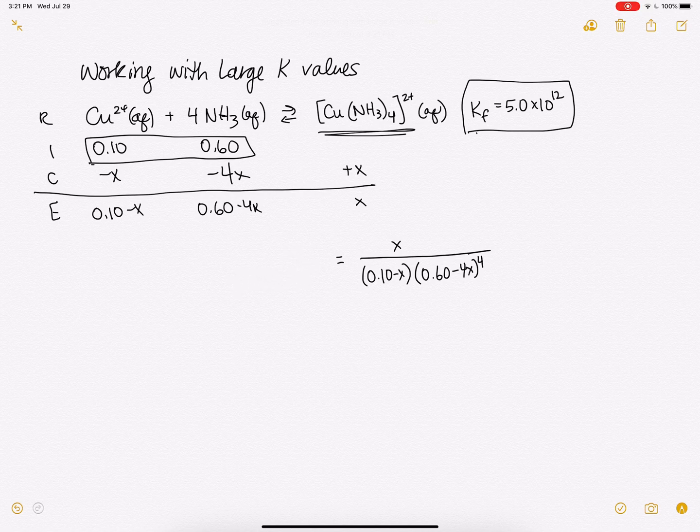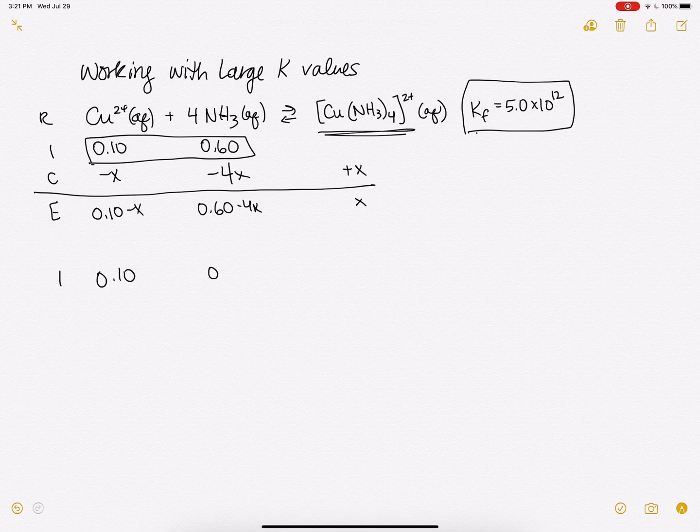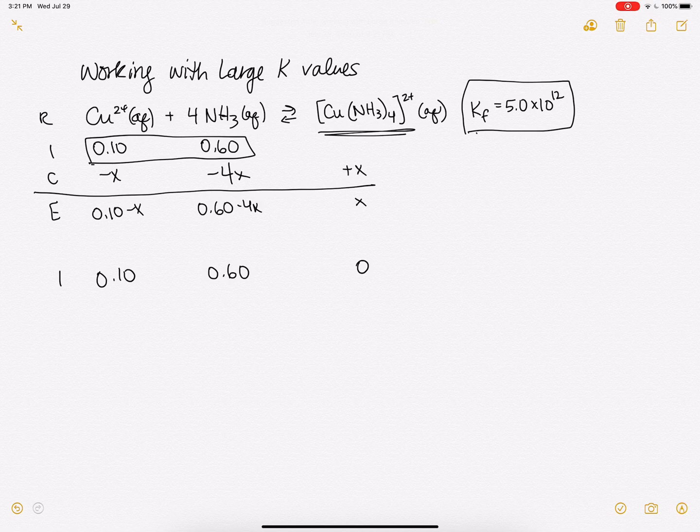So we're going to redo our rice table and we're going to pretend. And what we're going to do is we're going to pretend we have our initial amounts 0.1 and 0.6 and 0. And we're going to pretend that it reacts completely.